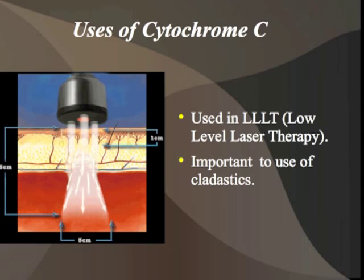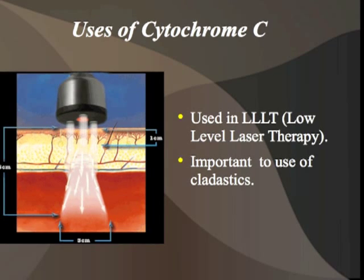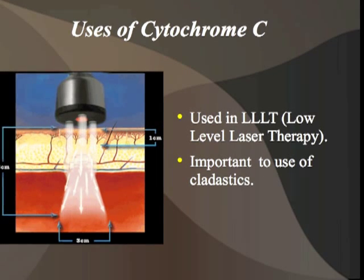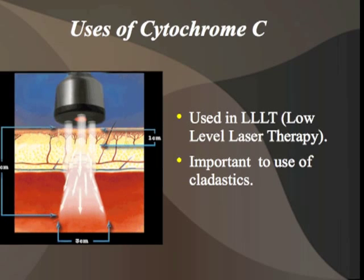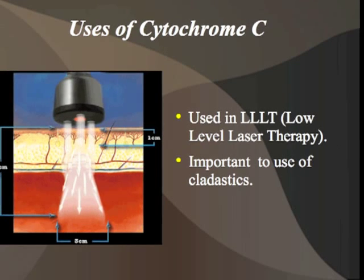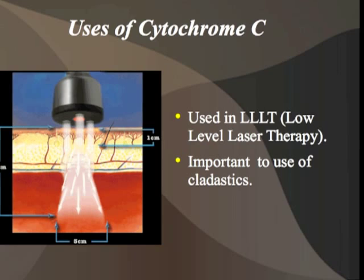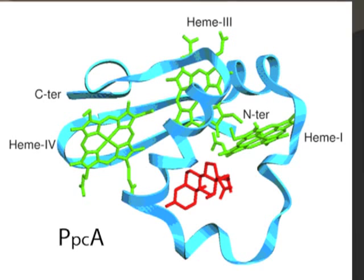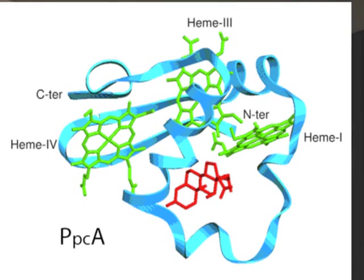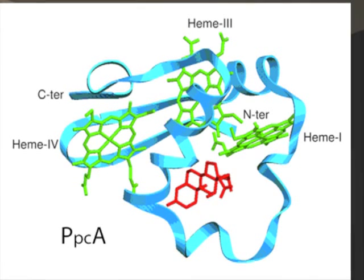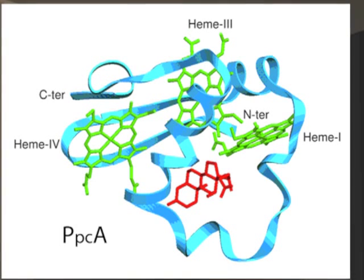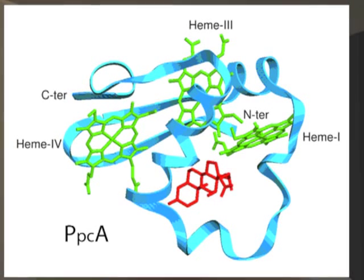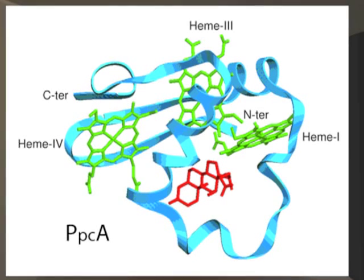Even beyond this healing use, there is also the application of cytochrome C in cladistics — the scientific application of characterization and classification by means of protein identification. As you can see here, the structure of cytochrome C is quite simple, with several locations of possible heme attachments, but the overall complexity of the protein is not great.